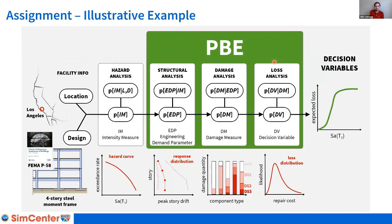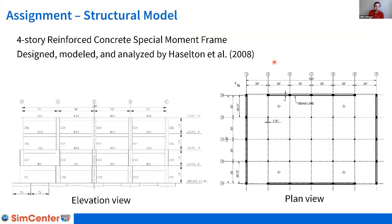Looking at the particular assignment in the attached files for the end of the workshop: we are looking at a frame structure located in Los Angeles, and we will bring in structural analysis results from an external calculation, then calculate damage and losses for the structure using FEMA P58 methodology. The structural model is one of the famous Hazelton frames, and the whole example is from FEMA P58 — heavily documented and available in the FEMA P58 background documentation. I used that documentation to create an input file that you can load into the application, with everything populated so you can see all the settings required to run this example.